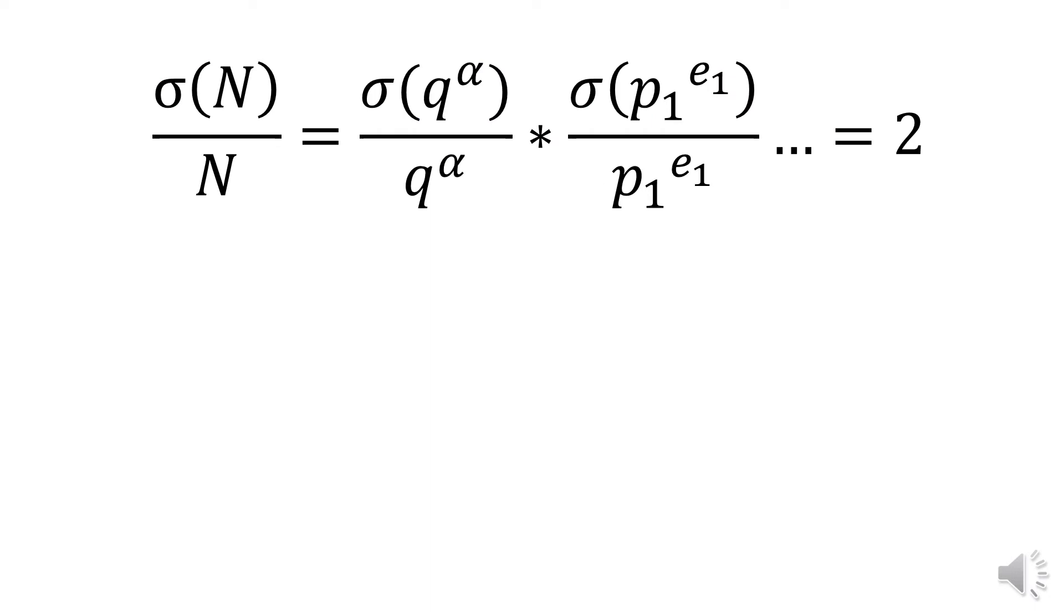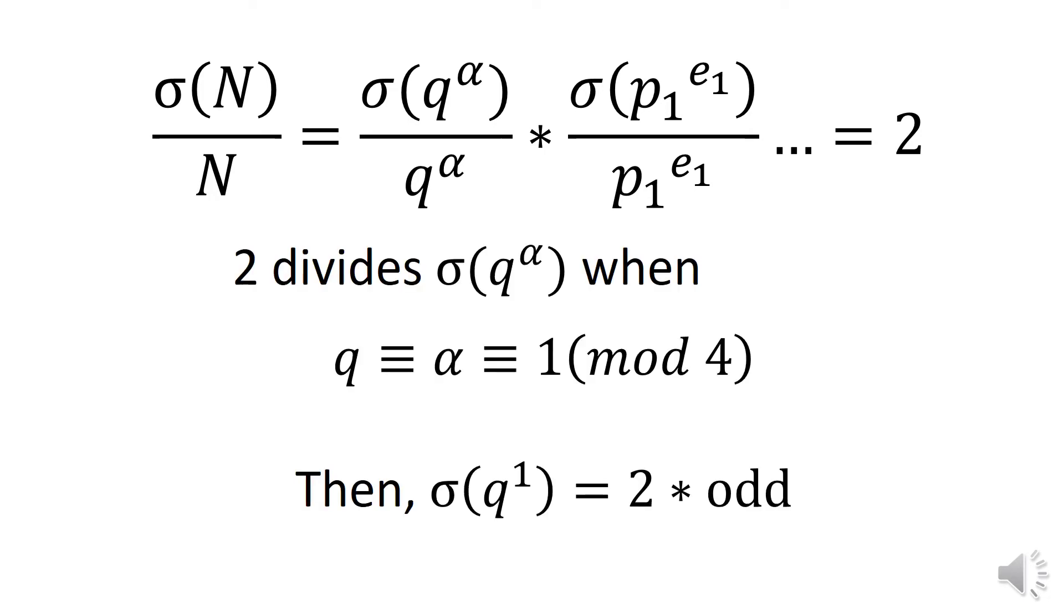We need a special prime to an odd power to make a fraction with two in the numerator. The special prime q is the only prime with an odd exponent in N. Then two is a factor of the sum of divisors of q to the alpha when q is congruent to alpha is congruent to one mod four. Then sigma of q to the first power is two times an odd number, leaving a single two in the numerator to make a quotient of two perfect.